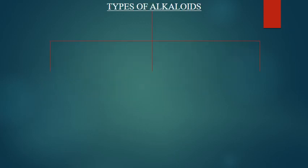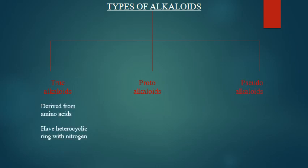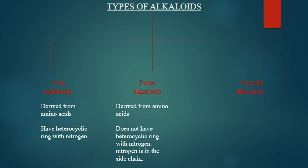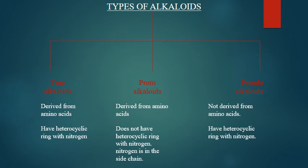There are three types of alkaloids: true alkaloids, proto alkaloids, and pseudo alkaloids. True alkaloids are derived from amino acids and have a heterocyclic ring with nitrogen. Proto alkaloids are also derived from amino acids but do not have a heterocyclic ring with nitrogen — the nitrogen is in the side chain. Pseudo alkaloids are not derived from amino acids but do have a heterocyclic ring with nitrogen.